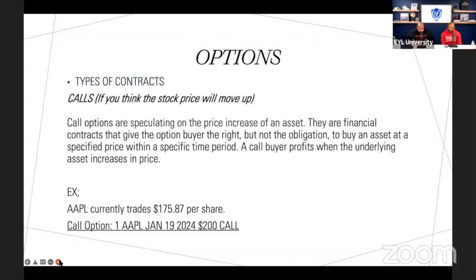There's two types of options — this is for beginners. It comes down to calls and puts. Calls: if you think the stock price will move up, you're going to make a call. Call options are speculating on the price increase of an asset. They are financial contracts that give the buyer the right, but not the obligation, to buy an asset at a specific price within a specific time — which would be the expiration date.